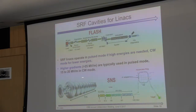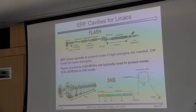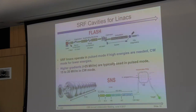Here's a cavity that many of these machines use — the one developed for TESLA a long time ago. The ILC, FLASH, and the European XFEL all use this type of cavity; the ones we have here in the ERL also look very similar. This design can be pulsed or CW depending on the machine. High gradients are typically used for pulsed machines; for CW, you typically run at lower fields because the cost optimum — once you account for cryogenic cooling — forces you to run at lower gradients.